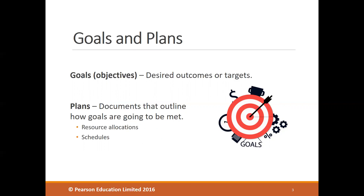Goals, also known as objectives, are desired outcomes or targets that the company wants to achieve. They guide management decisions and are often described as essential elements of planning. You have to know your desired target or outcome before you establish plans for reaching it. Plans, on the other hand, are documents that outline how goals are going to be met, usually including resource allocation, schedules, and other necessary actions to accomplish the desired goal.